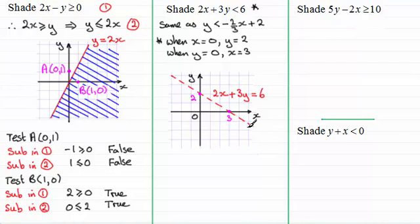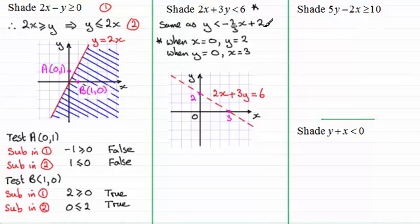Notice I've drawn this as a dotted line, as opposed to a solid line as in the previous example. That's because the inequality is a strict less than — the same would be true for a strict greater than. It's always solid if you have an equals underneath, i.e., greater than or equal to or less than or equal to. I could have drawn the line from the rearranged form y equals minus two-thirds x plus 2 — it crosses the y-axis at 2 and has gradient minus two-thirds — but the intercept method is generally easier.